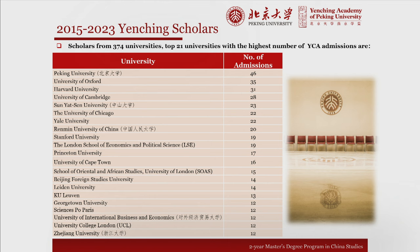Over the first nine years of admission intakes, we've had scholars join from just under 375 universities worldwide. You can see the top 21 universities that have placed the highest number of graduates into our program. You don't have to be from one of these universities to get into Yanjing Academy. We do want more representative diversity from scholars at top universities in their home countries and regions—this list just happens to represent the universities with the highest placement numbers.